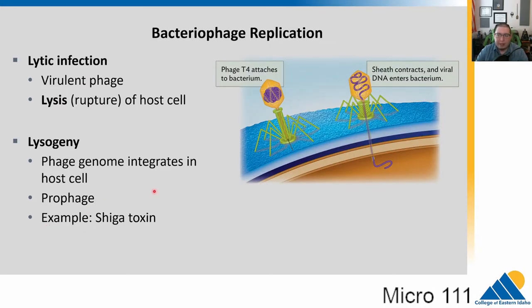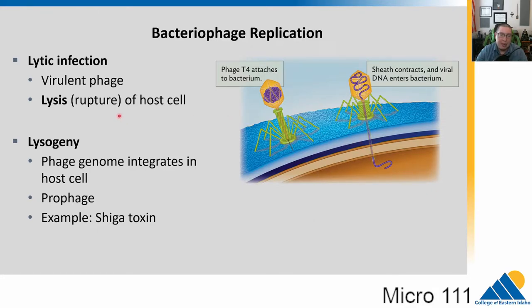We're going to talk about this in terms of bacteriophages. T4 bacteriophage infects things like E. coli. It has to land on the cell, and when it does it injects its genome into the cell, and then one of two phases can occur.